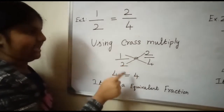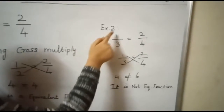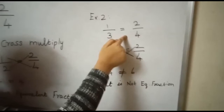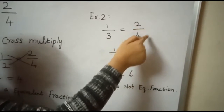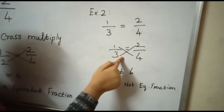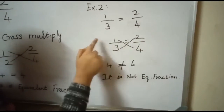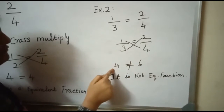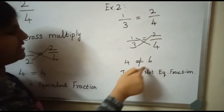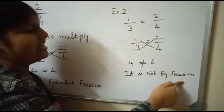If the products on both sides are not equal: Is 1/3 equal to 2/4? Cross multiply — 1 times 4 is 4, and 3 times 2 is 6. They are not equal, so it is not an equivalent fraction.